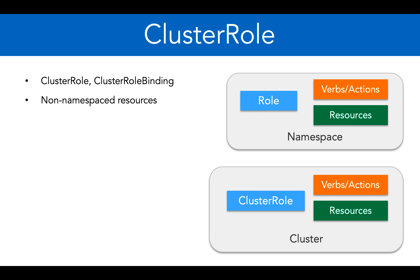We need cluster role because of non-namespaced resources. So far we have discussed resources like pods, deployments, replicasets, replication controllers, and services — all created in a particular namespace. But there are resources in Kubernetes not bound to any namespace, for example nodes, persistent volumes, secrets, and namespaces themselves. If you need to provide RBAC authorization for these resources, you must use cluster role and cluster role binding.